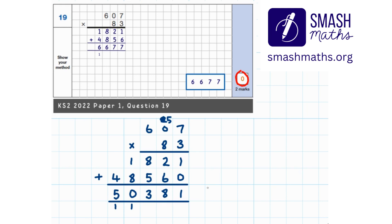So the correct answer is 50,381. The answer of 6677 is incorrect. So when we compare the working, we can see that the placeholder zero that we used here is missing in the written out calculation. So that is the error - the placeholder zero has not been used when multiplying by a tens digit.